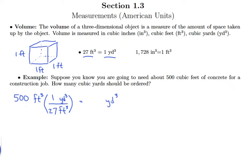So that right away gets us the units we want—our cubic feet cancel out. And so we're left with 500 divided by 27 cubic yards. And then we just need to carry out this division here.